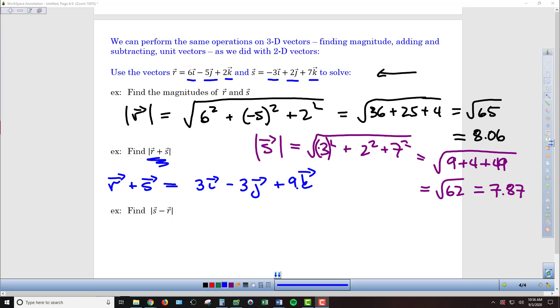So for that magnitude, R plus S is equal to the square root of 3 squared is 9 plus negative 3 squared is 9 plus 9 squared is 81. We're looking at the square root of 9 plus 9 plus 81 is 99, and to three decimal places is 9.95.